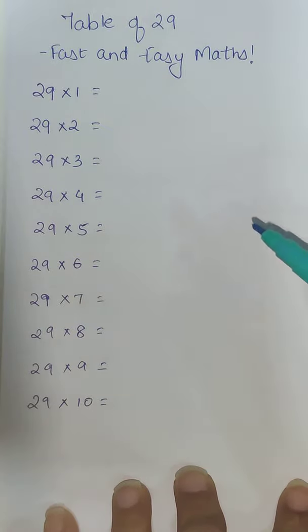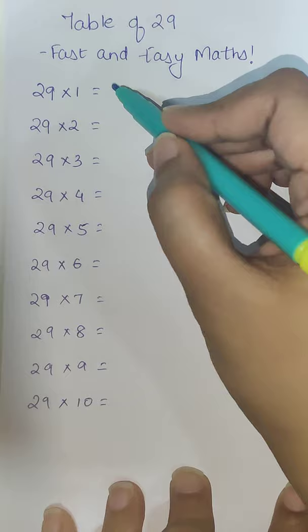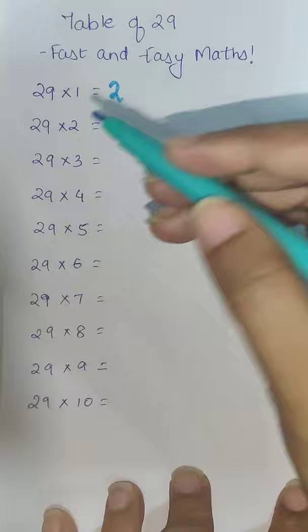Welcome everyone. Today I'm going to show you a trick for the table of 29. Here we are going to start with 2, and the next digit for this column will be added 3 to the previous digit.